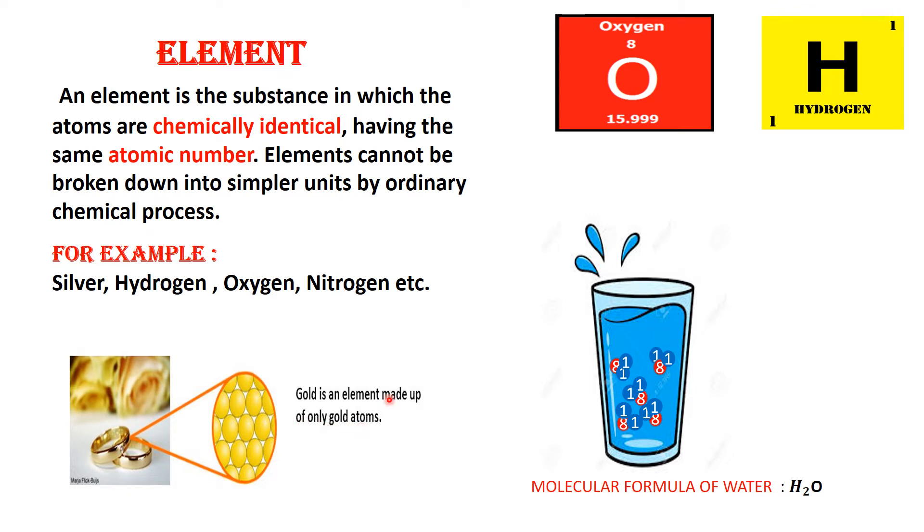Now, let's take another example. Here you can see a glass of water. Students, the molecular formula of water is H2O. It means that one molecule of water is made up of two atoms of hydrogen and one atom of oxygen. Now, how do we tell these atoms apart? That is, how do we know which atom belongs to hydrogen and which atom belongs to oxygen? Students, we can identify the atoms from their atomic number.